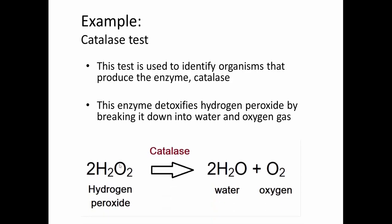If you respire oxygen, one of the things that can happen is you actually produce hydrogen peroxide as a byproduct of oxygen metabolism. Hydrogen peroxide can be harmful to the cell, so in order to deal with that harmful byproduct, cells have evolved an enzyme called catalase. What catalase does is take hydrogen peroxide and split it apart to make water and oxygen — two harmless byproducts. So if you're breathing oxygen, you'll have to deal with hydrogen peroxide, and catalase helps neutralize it into two harmless substances.